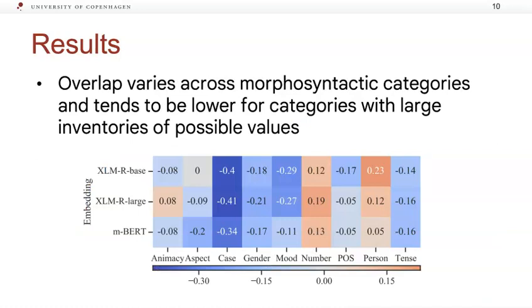Further, we find that overlap varies across morphosyntactic categories and tends to be lower for categories with large inventories of possible values, prominent exceptions being number and person.